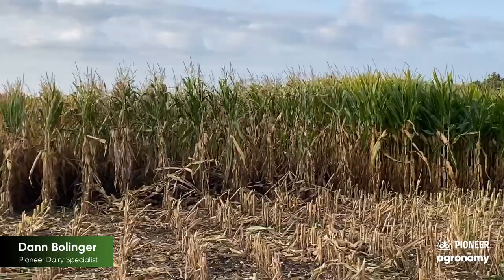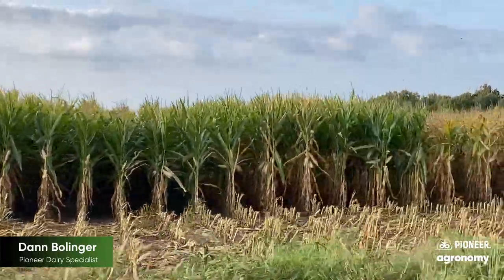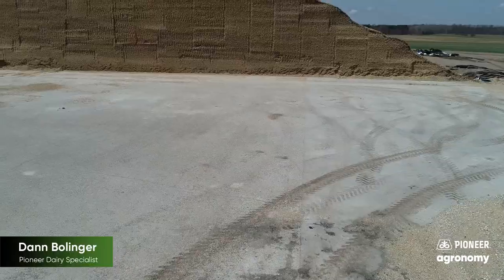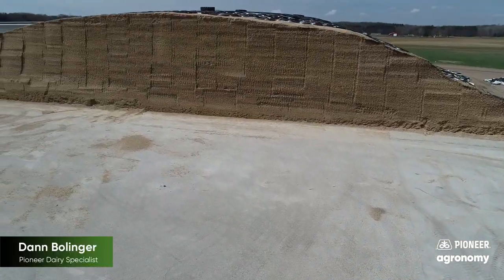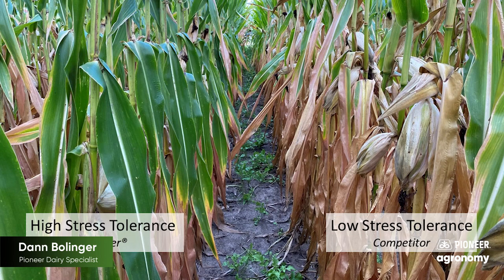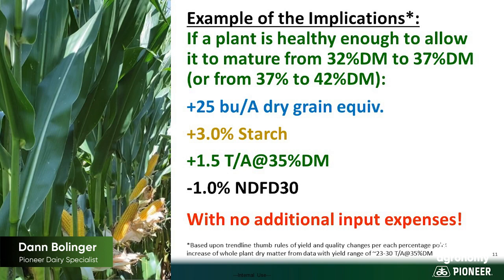You can have more confidence in yield information as well as agronomic observations you make in the field, and those two are more likely to benefit your farm going down the road. Especially with agronomics — if I have a healthy plant, I have more opportunity with a wider harvest window to capture more of that yield and starch while retaining fiber digestibility, giving me a better probability of success as I feed that to my cows.